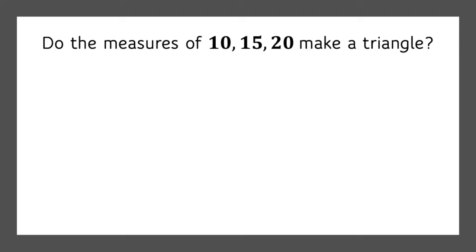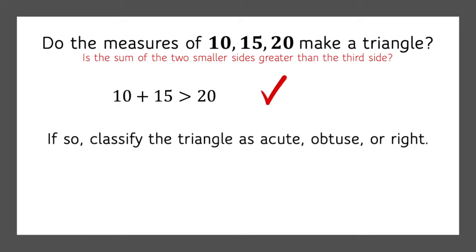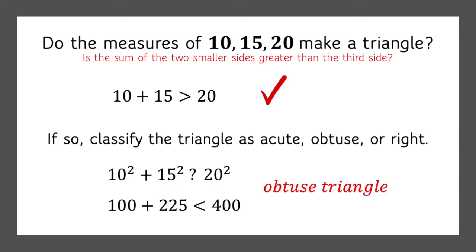Do the measures of 10, 15, and 20 make a triangle? In other words, is the sum of the two smaller sides greater than the third side? Is 10 plus 15 greater than 20? Yes, it is. Okay, if it's a triangle, which it is, let's classify that triangle as acute, obtuse, or right. In other words, 10 squared plus 15 squared, what relationship does that have to 20 squared? Well, 100 plus 225 is less than 400. So we know we're working with an obtuse triangle. Let's try another one.